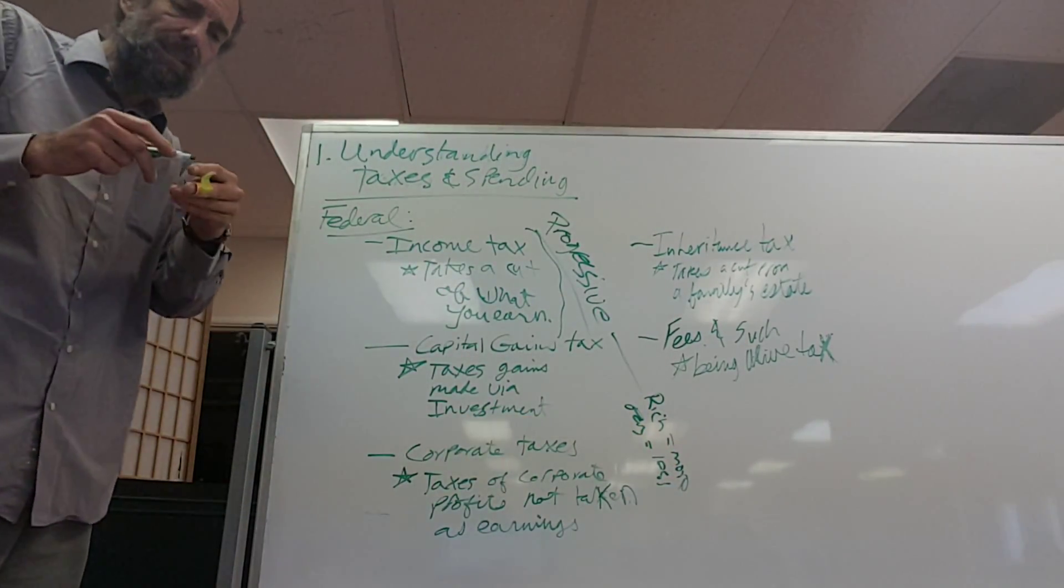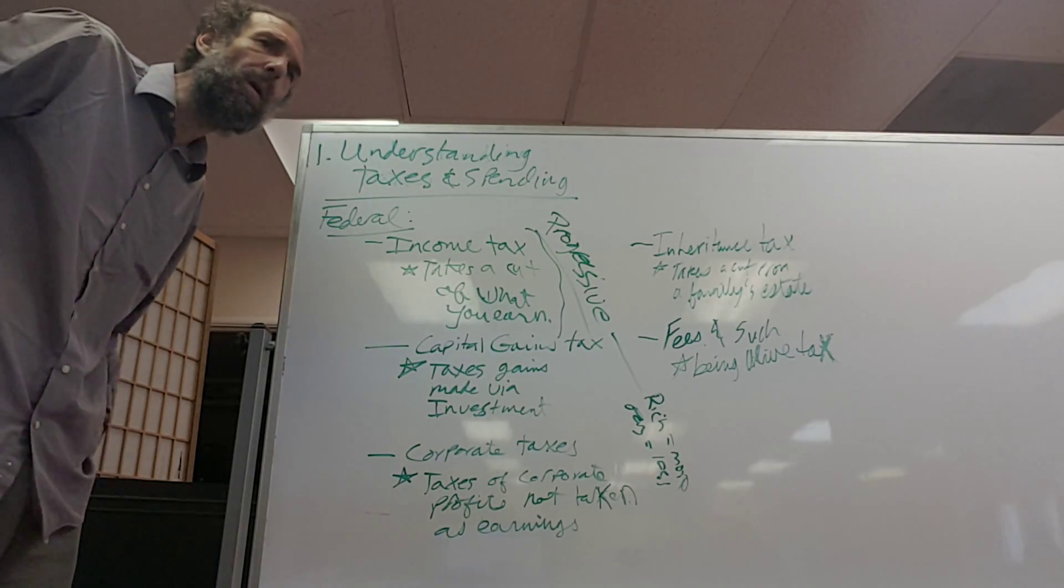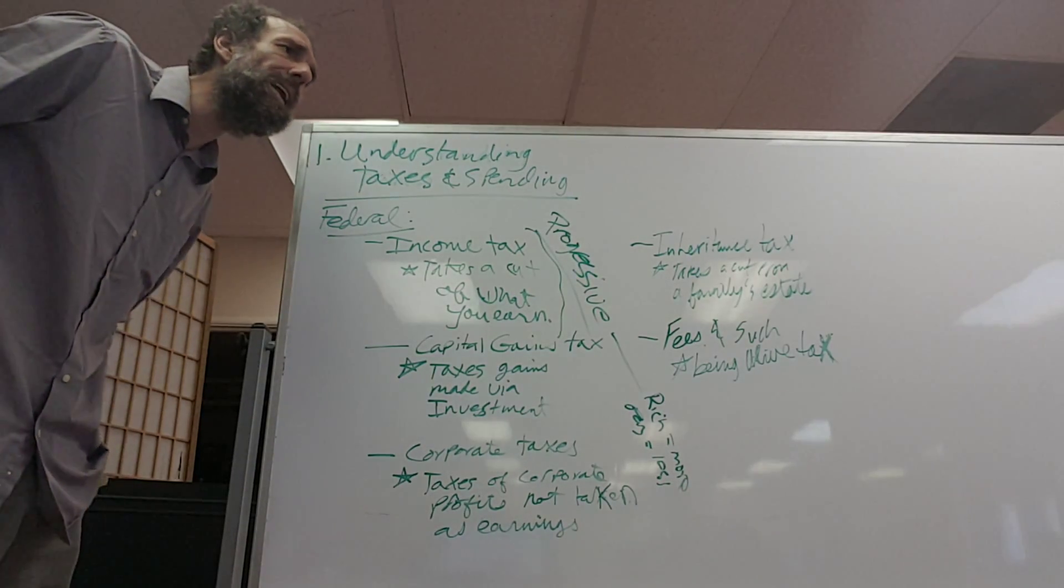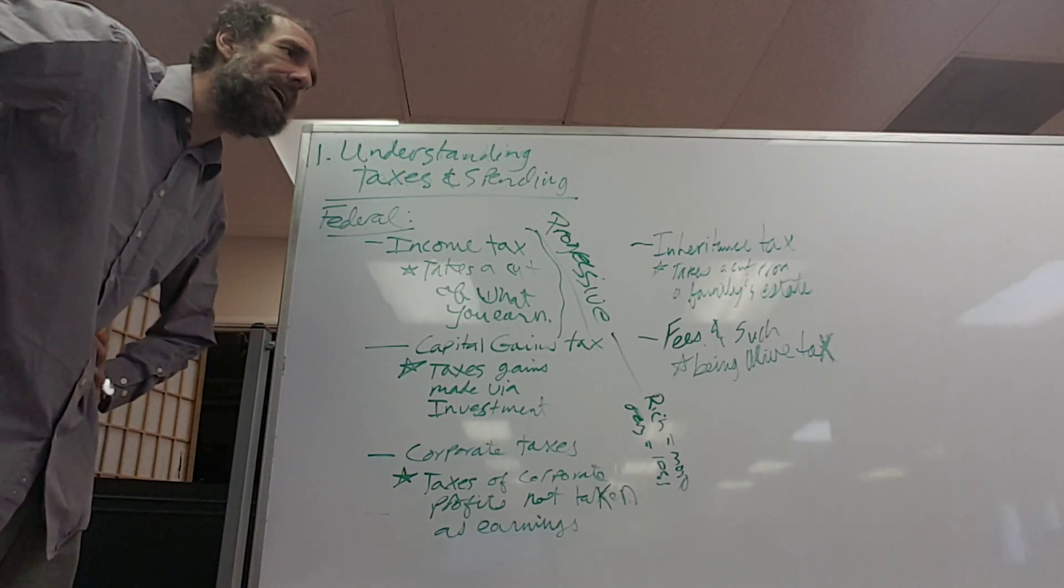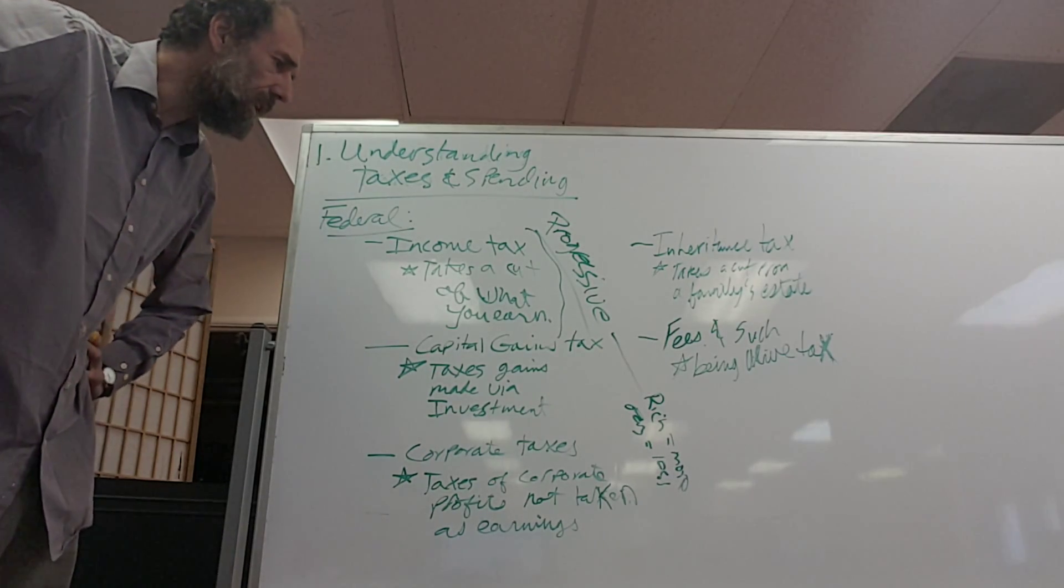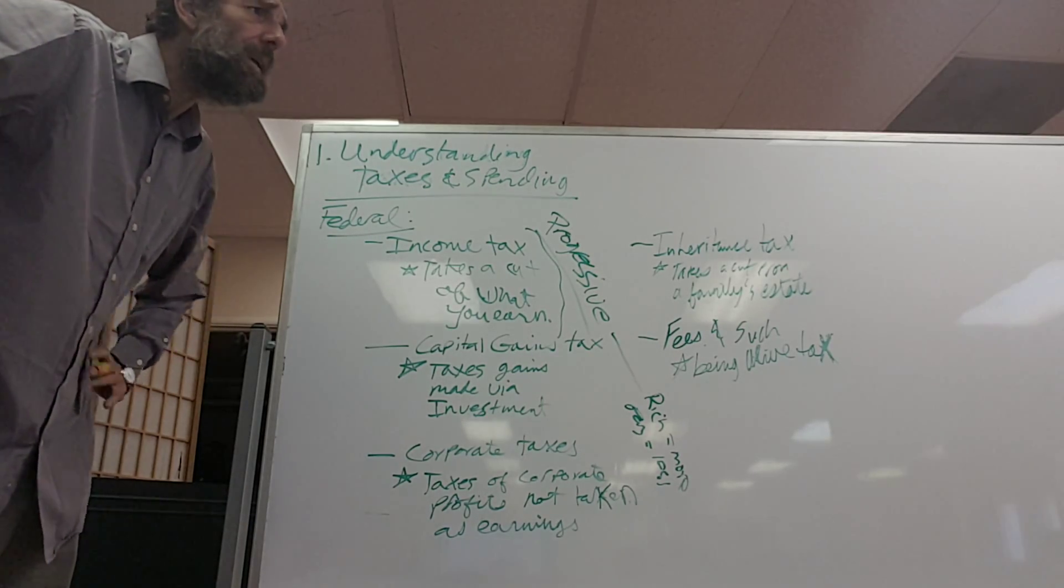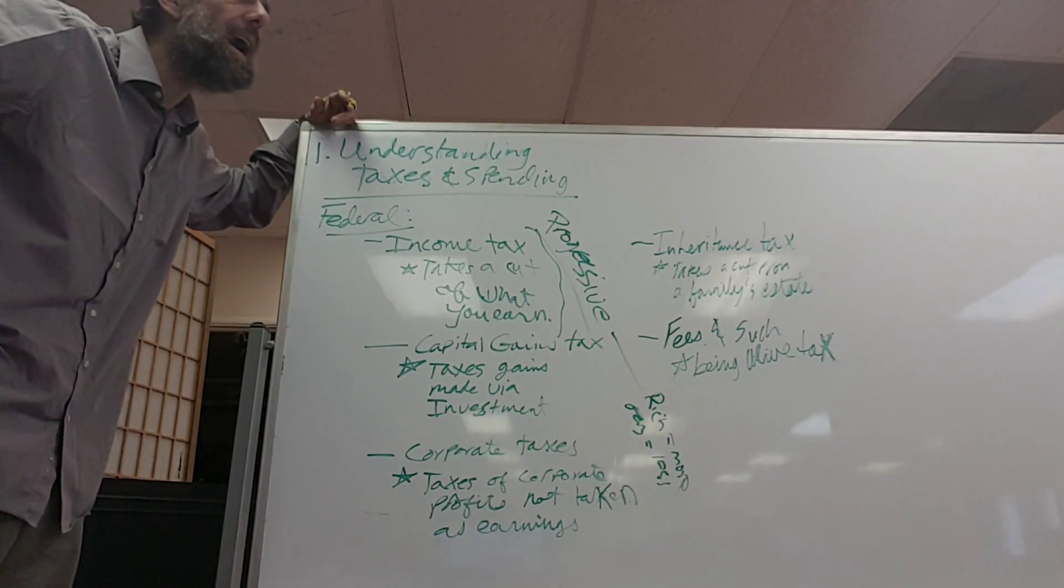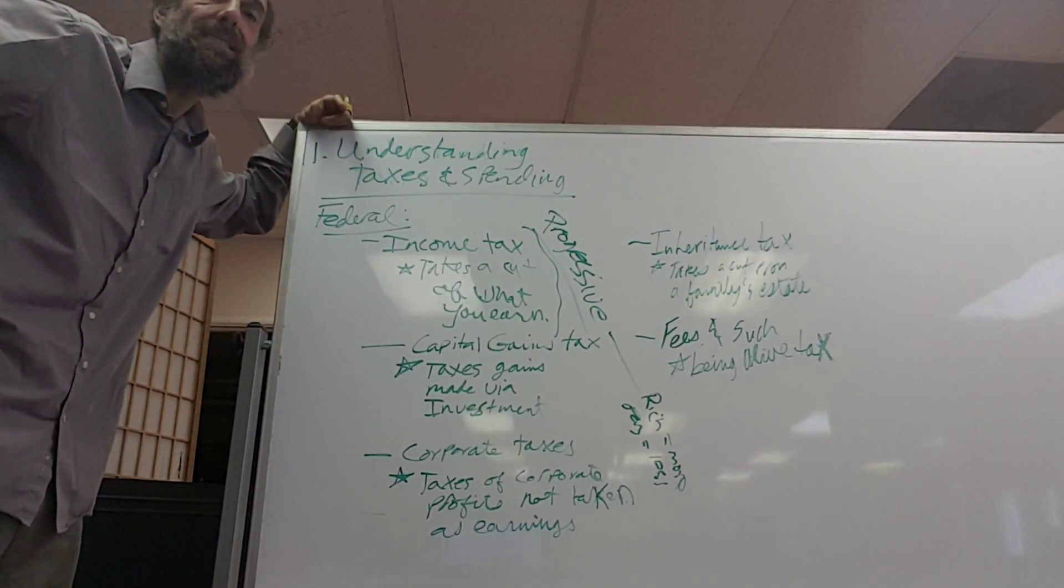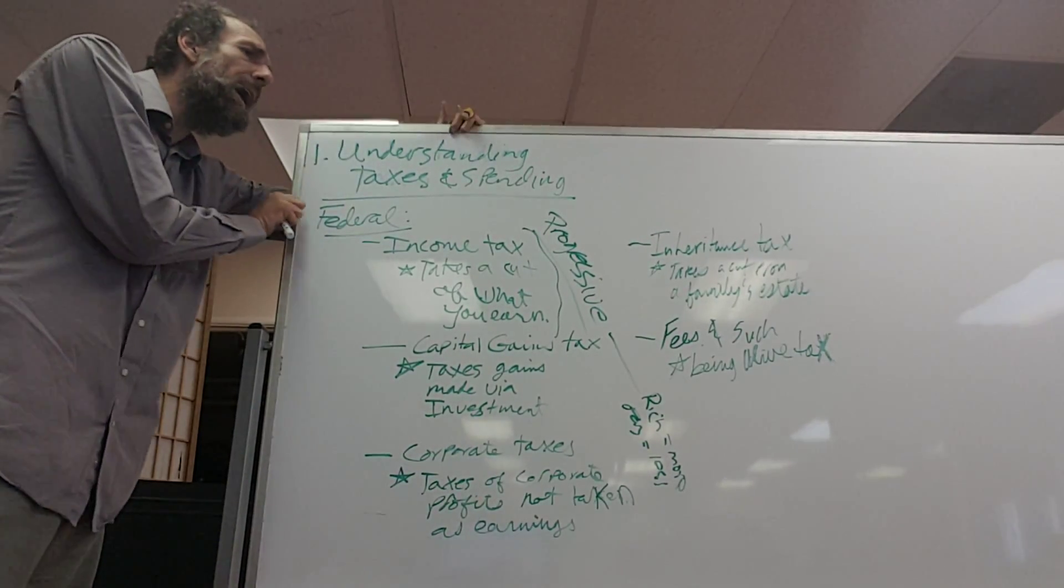Capital gains taxes are taxes that are not on money you earn or make, but rather on money that happens because of time passing. So if you own a home, you purchased a home, and over time your home gets more valuable. It doesn't necessarily get more valuable, but it might.